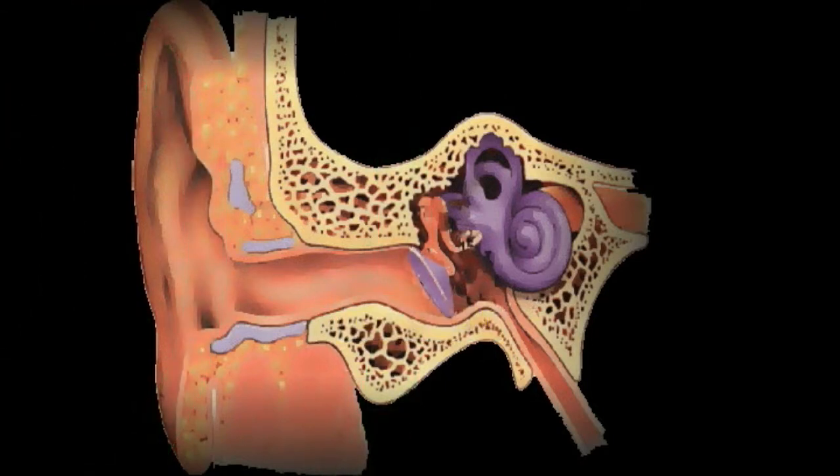These vibrations are then passed to three tiny bones in the middle ear called the ossicles: the hammer, anvil, and stirrup. The ossicles amplify the sound and send the sound waves to the inner ear and into the fluid-filled hearing organ, the cochlea.